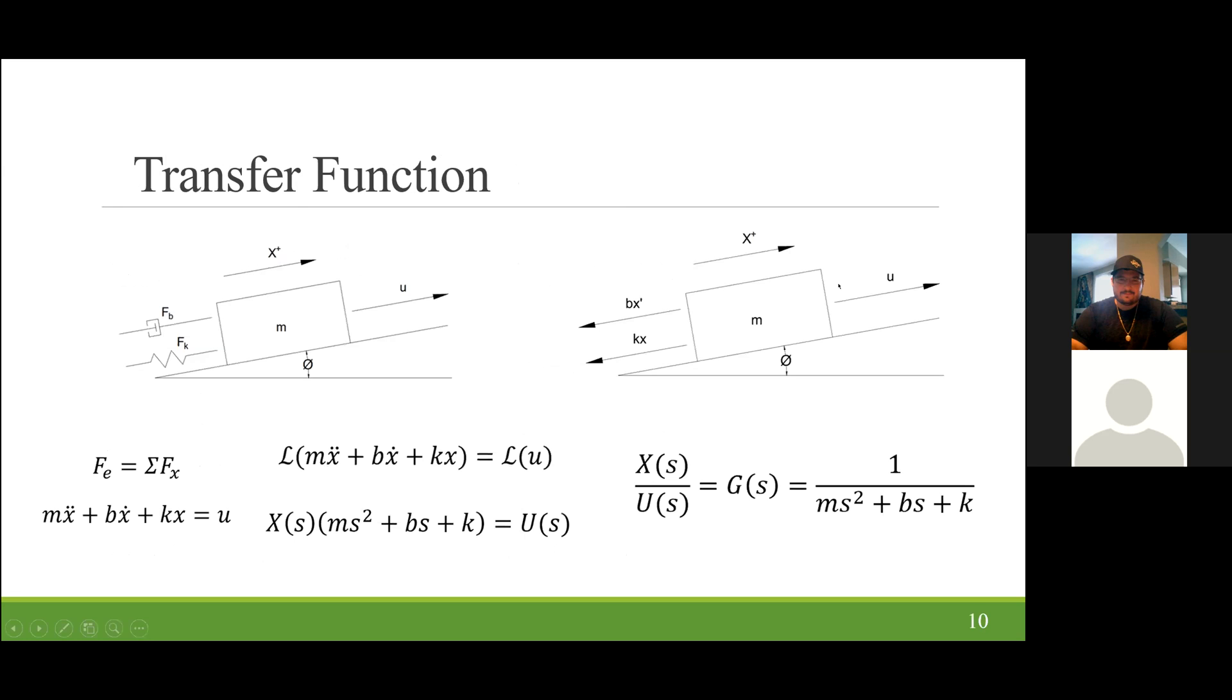Before we can start using our variables, we have to put them in a functional function. This is our transfer function. Basically, the force needed to overcome the disturbance is the summation of the forces in the x direction. So from this, we get mx double dot plus bx dot plus kx is equal to u. After taking the Laplace transform on both sides, we end up with our transfer function, x of s over u of s, or g of s, which equals 1 over ms squared plus bs plus k.